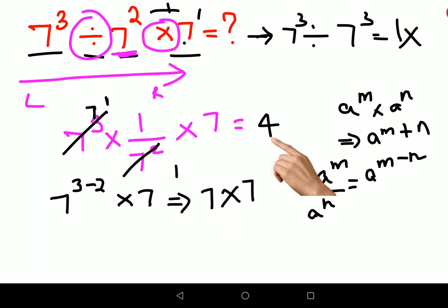So the final answer is 49. Now for your DIY: 6 raised to 4 divided by 6 square times 6 square. Please tell me the answer. Do like, share and subscribe.